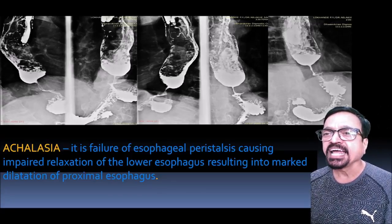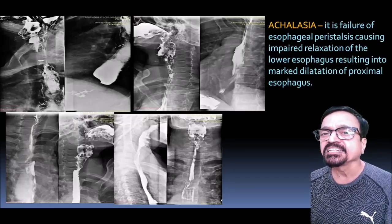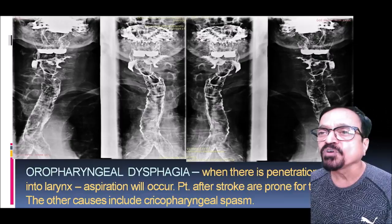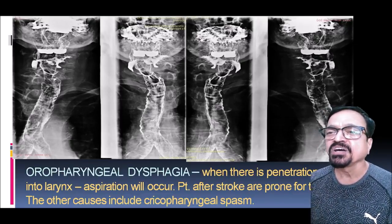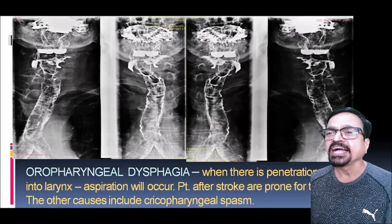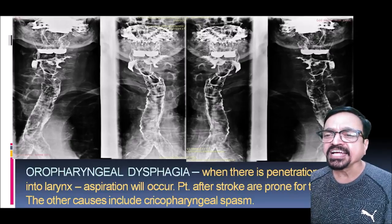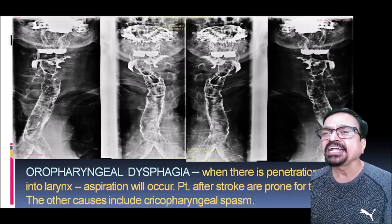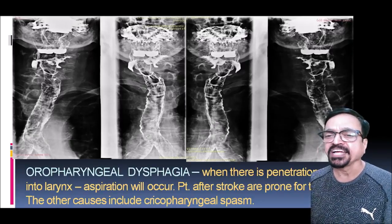In another case of achalasia, the water-soluble contrast or dilute barium has entered the airway. As you can see it entering the trachea, we must abandon the procedure and facilitate removal of the contrast from the trachea. In this patient, water-soluble contrast rather than barium must be used.